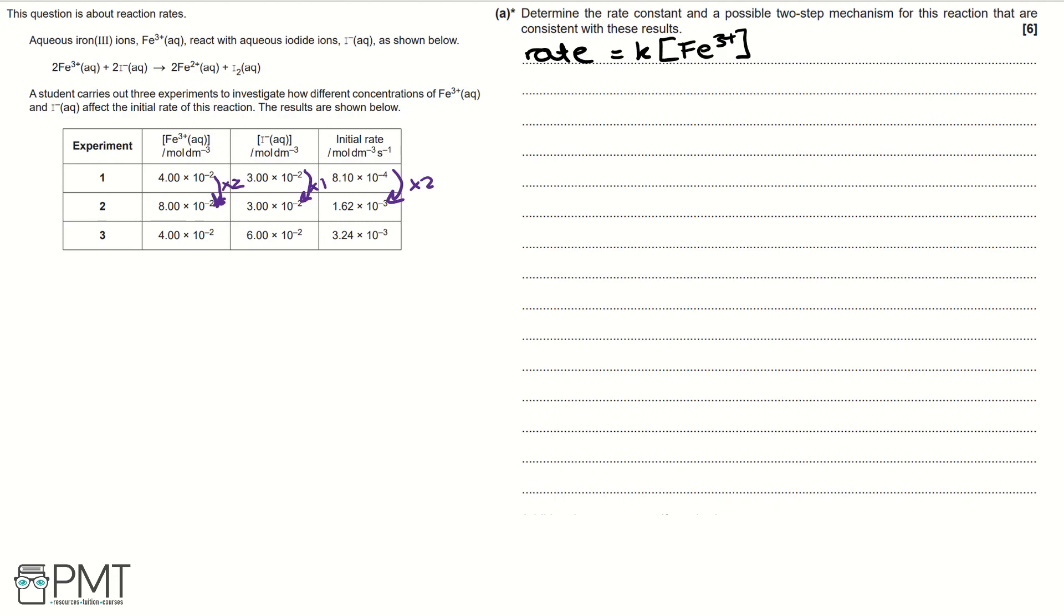Then we need to do the same for I⁻. We're looking where Fe³⁺ has stayed the same. So for experiments one and three, I⁻ has doubled and therefore we need to look at the initial rate and it has quadrupled between experiments one and three. Therefore, in the rate equation, we write I⁻ to the power of two because it's a second order reaction.